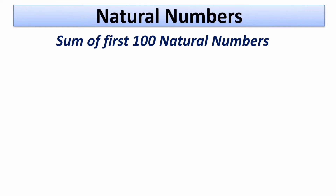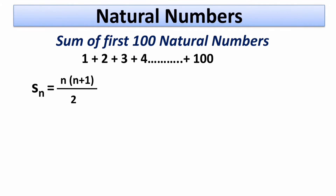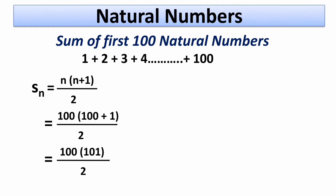Now let's see one more example: sum of first 100 natural numbers. Here we have 1 plus 2 plus 3 up to plus 100. Use the same formula, now replace n by 100. So we get 100 times (100 plus 1) divided by 2, equals 100 multiplied by 101 divided by 2, equals 10,100 divided by 2, which equals 5050. In this way, without performing actual addition, you can obtain the sum of any number of natural numbers.